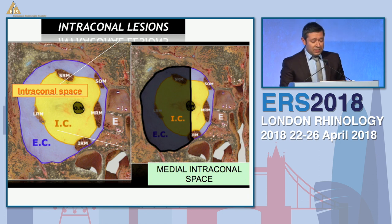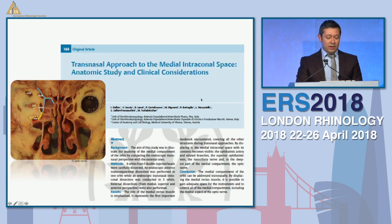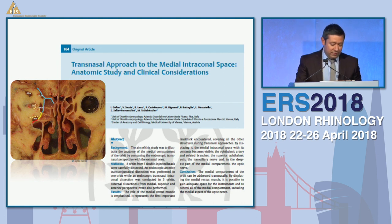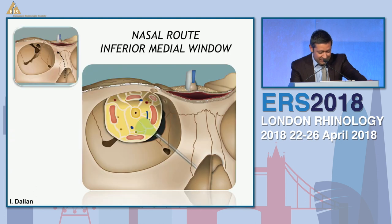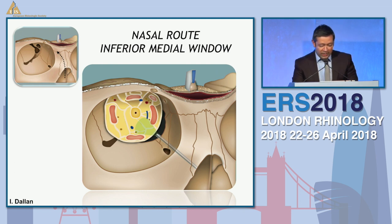Now, all changes when you are dealing with intraconal lesions. You can divide the intraconal space into two areas: the superior one and the inferior one. There are different windows — the inferior one is the most used, but you can also use a superior one. The space between the muscles is the corridor towards the lesion. This is the pioneering study of Jacopo — he studied all the vessels inside this area, which allows us to have safe surgery. Before starting, you have to know the anatomy and what you can damage.